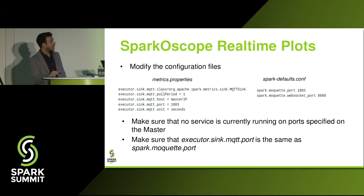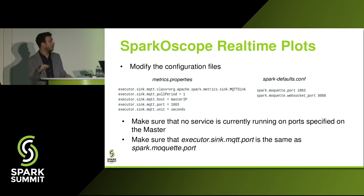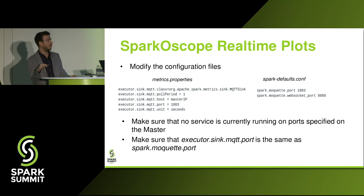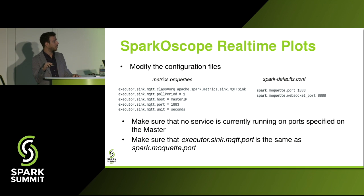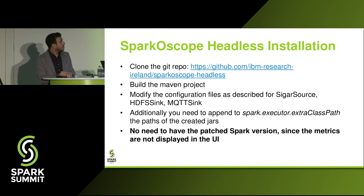For real-time plots, specify the MQTT sync as a sync class at the executor level, modify the polling period, put in the master IP and port for the MQTT broker, and on Spark defaults specify the MQTT port and the WebSocket port. Be careful with those ports — there shouldn't be anything already running on the ports you specify. Make sure both the MQTT broker port and the WebSocket port are completely free.